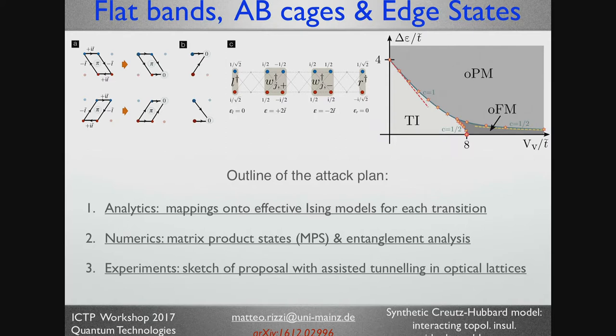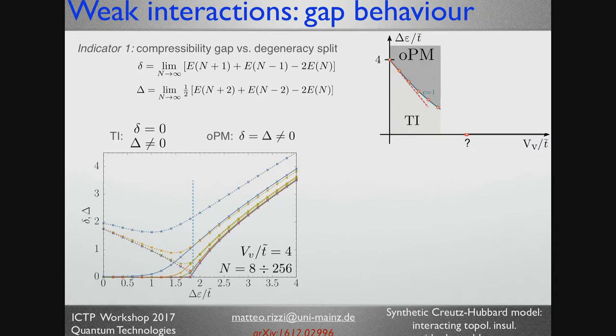So that's the analytics. Then we employ numerics based on matrix product states, as I was promising. And then we do some little bit of entanglement analysis, entanglement spectrum and entanglement entropy analysis. And then I will come to a scheme how to realize the model or to explore the model in experiments. So let's get started from this side of the phase diagram. At zero interaction we know the picture. Let's see what happens at weak interactions. At weak interactions, the first thing that you want to look at is whether the edge states survive.